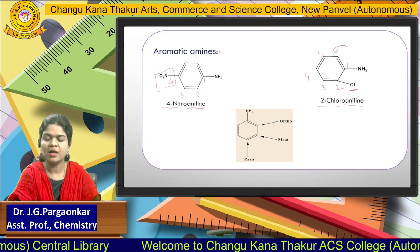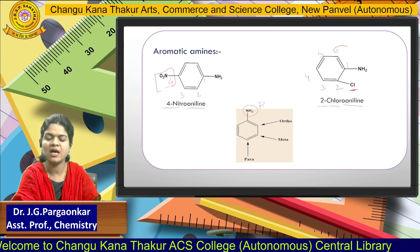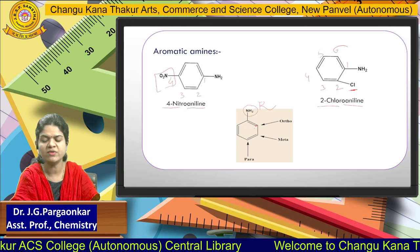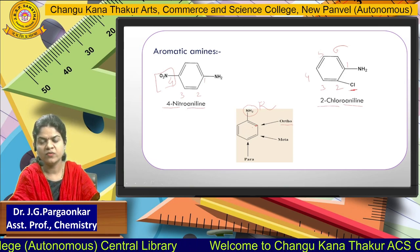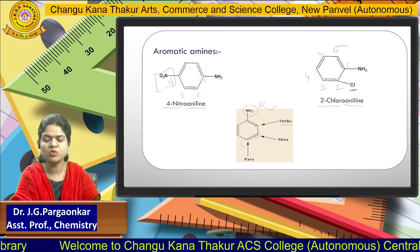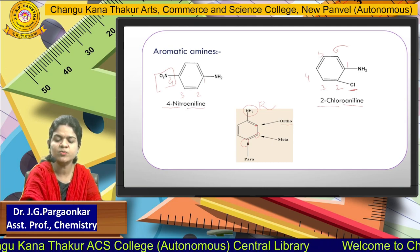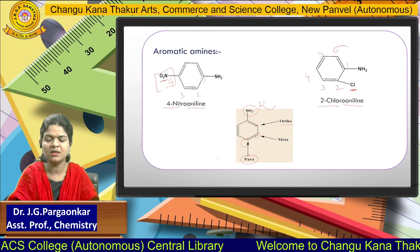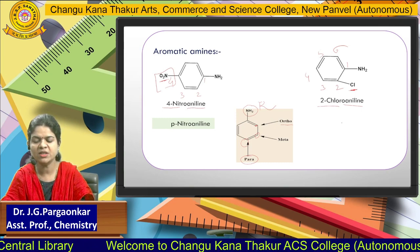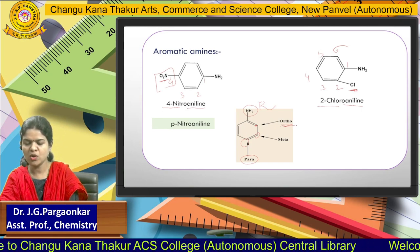For aniline structures, always keep in mind: the NH₂ group is at position one; the adjacent positions are the ortho positions (position two); the next carbon is the meta position; and exactly opposite is the para position. So an alternative name for 4-nitroaniline is para-nitroaniline, and for 2-chloroaniline the alternative name is ortho-chloroaniline.